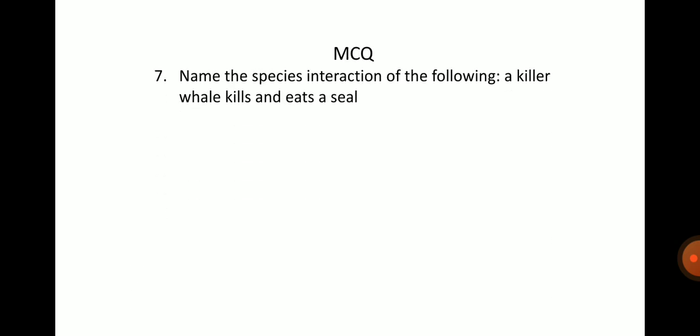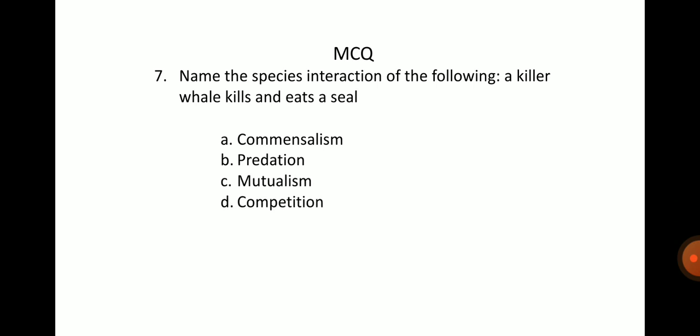Next question: name the species interaction of the following — a killer whale kills and eats a seal. Options: A. Commensalism, B. Predation, C. Mutualism, D. Competition. The answer is option B, it is called predation.